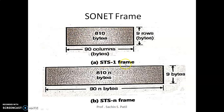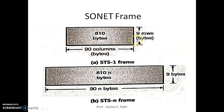What is the STS-1 frame rate? That is 9 rows multiplied by 90 columns, giving 810 bytes, with each block containing 8 bits. We get 8000 frames per second. So 9 × 90 × 8 bits × 8000 frames per second gives us a frame rate of 51.84 Mbps.